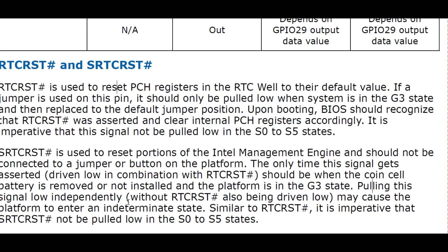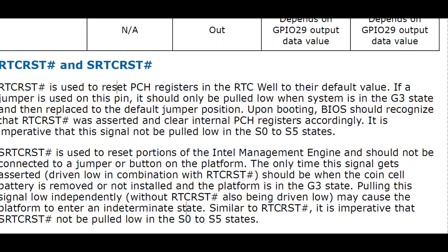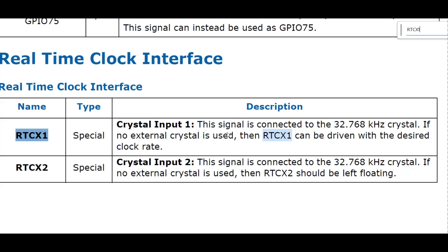Pulling SRTC_RST# low independently, without RTC_RST# also being driven low, may cause the platform to enter an intermediate state. It is imperative that SRTC_RST# not be pulled low in S0 to S5 states. Now regarding RTC_X1 and RTC_X2: these are the crystal input and output signals. RTC_X1 is connected to the 32.768 kHz crystal; RTC_X2 is also connected to the crystal at 32.768 kHz. A previous video regarding the RTC section explains all RTC_X1 and RTC_X2 signal details clearly using a DSO.